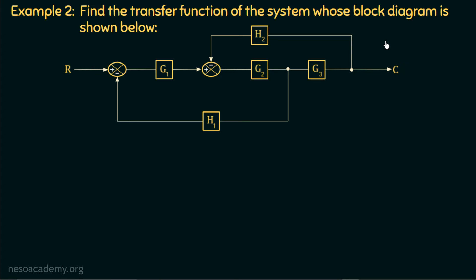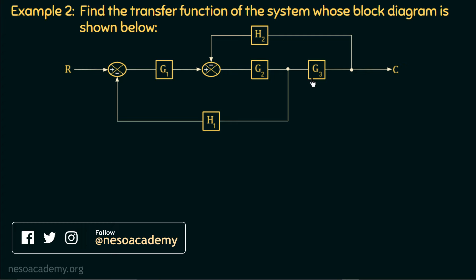If we observe this block diagram, we have two summing points. There are three blocks G1, G2, G3 in the forward path. There is a takeoff point at the output of block G2 having gain H1, which is connected to this summing point. There is one more takeoff point connected with the output of block G3 having gain H2, which is connected to this summing point with a negative sign. The reference input is R and the final output is C. This is the same example that we discussed in block diagram reduction.